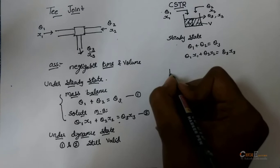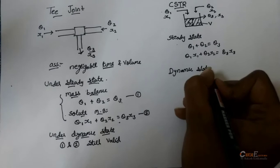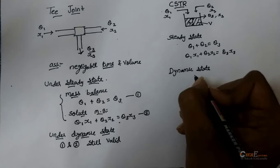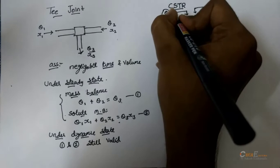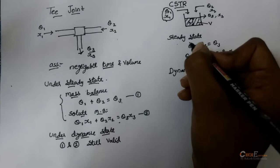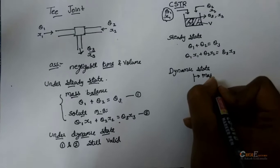Now, under dynamic state, as I discussed that in dynamic state, there will be change in one or more inputs. So, let us take, there is a change in the first input. Now, here, there are two changes to be taken place. Either mass flow rate or solute concentration.